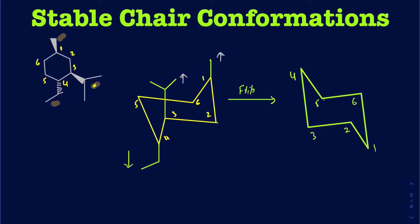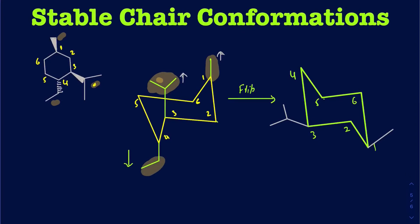In the previous conformation, I had the methyl group on the axial position. When I flip this, that methyl group is going to be on the equatorial position. On carbon three, the isopropyl group was axial before — when it flips, it's going to be on the equatorial position. On carbon four, the ethyl group was axial, and when I flip it, the ethyl is going to be equatorial as well.